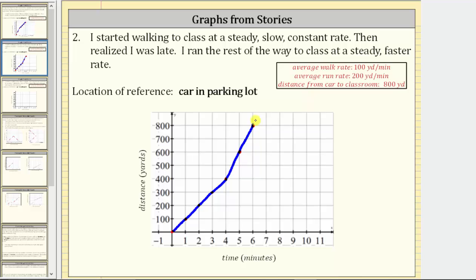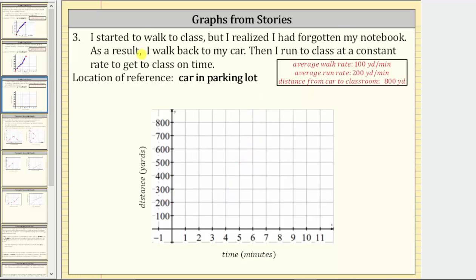Let's look at one more story that's more involved. For number three: I started to walk to class, but I realized I had forgotten my notebook. Let's assume I walked for the first two minutes. At time zero, I am zero yards from the car. After one minute, 100 yards; after two minutes, 200 yards from the car. This piece of the graph represents me walking to class before I realized I forgot my notebook.